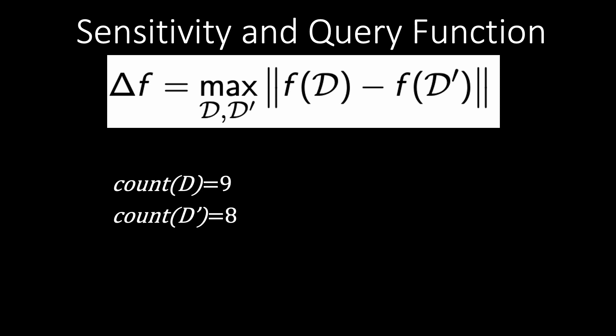If you remove one person the difference will always be one, which makes the sensitivity of the count query for every database one. This is intuitively clear as removing one person always changes the count by exactly one.